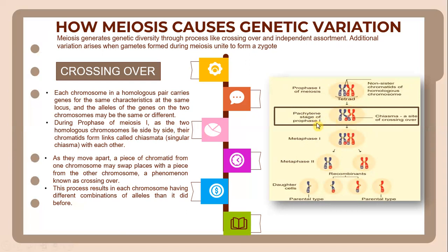During prophase one, as the two homologous chromosomes lie side by side, their chromatids form links called chiasmata with each other, which mark the sites of crossing over. As they move apart, a piece of chromatid from one chromosome may swap places with a piece from the other chromosome, and crossing over has occurred.